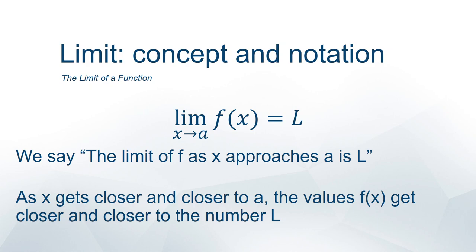Here we see the basic limit notation: LIM, the abbreviation for limit, your independent variable or function input, the value it's approaching — using A for an arbitrary constant — the function f of x, and then L, the limiting value. We'd read this as 'the limit of f as x approaches A is L.' The idea is that as x values get closer and closer to A, the function outputs, the y values, get closer and closer to L.